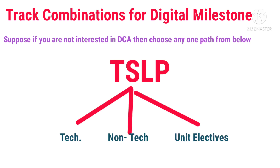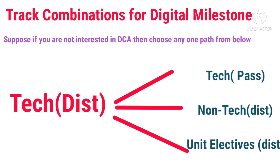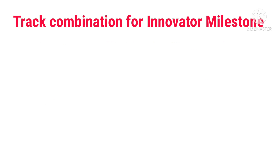If you are not interested in DCA, follow the TSLP path. TSLP contains Tech tracks, Non-tech tracks, and Unit Electives. You must select one Tech track. If you choose Tech track plus Non-tech track, you must get two distinctions. If you choose Tech track plus Unit Electives, two distinctions are also required. But if you choose two Tech tracks, then one distinction and one pass is enough. Choose the path you are most interested in.